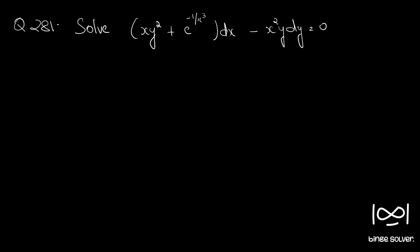Question number 281. Solve: x y squared plus e raised to minus 1 by x cubed, dx minus x squared y dy equals zero. Extracting dy by dx, we have dy by dx equal to x y squared plus e raised to minus 1 by x cubed, divided by y.